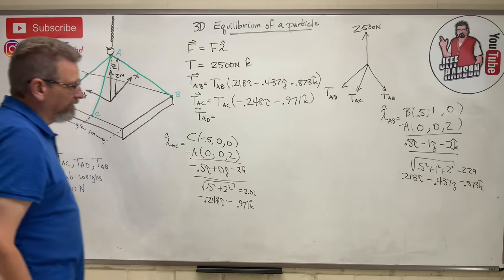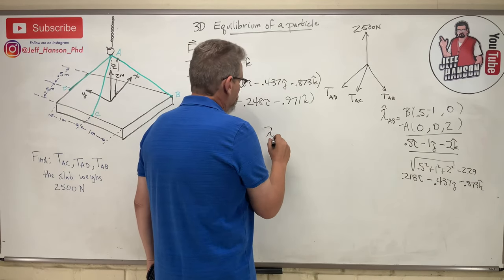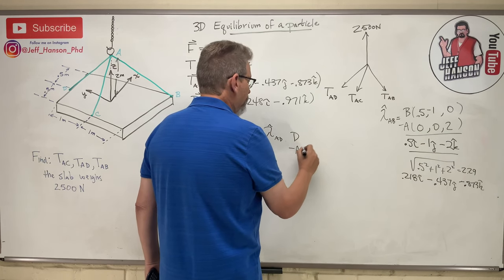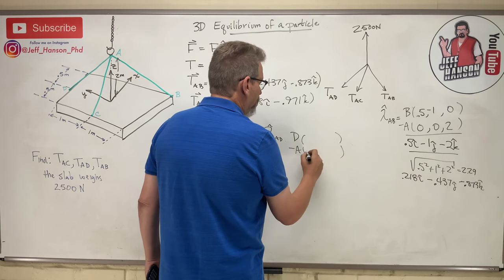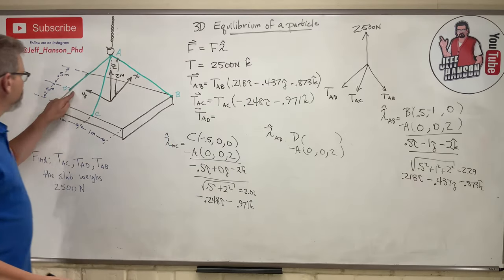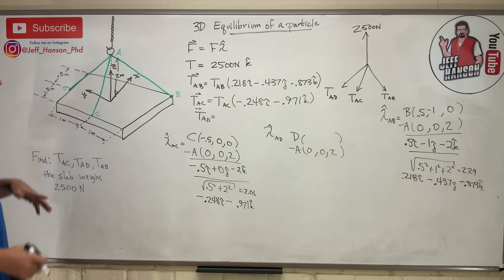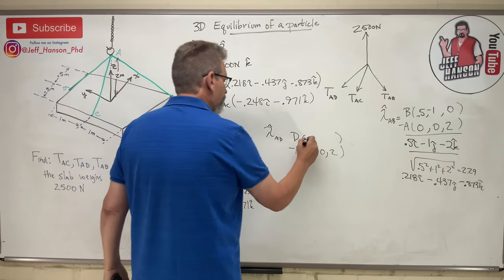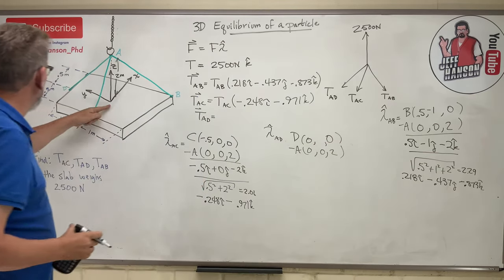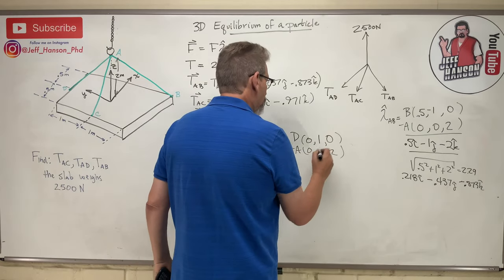0.5 squared plus 2 squared equals square root, answer equals 2.06. And so let's do this one. So 0.5 divided by 2.06 is 0.248 i hat but that's going to be negative, and then negative k hat is going to be 2 divided by 2.06, 0.971 k hat. So that's going up here, that's TAC, so I don't know that one. TAC times lambda hat which is negative 0.248 i hat minus 0.971 k hat.